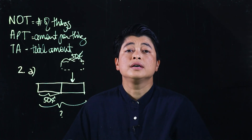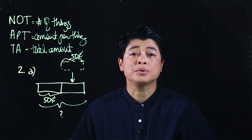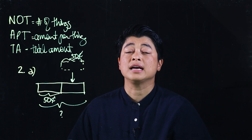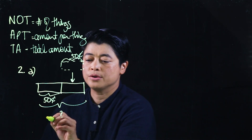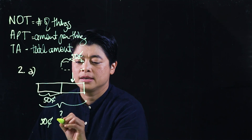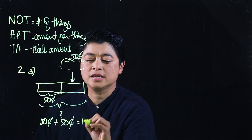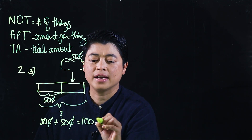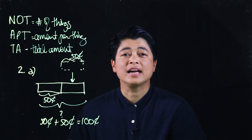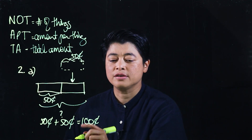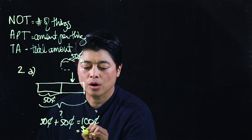Since the unknown is the whole thing, this is an addition problem. So 50 cents plus 50 cents equals 100 cents. From the earlier lesson, we know 100 cents equals one dollar.